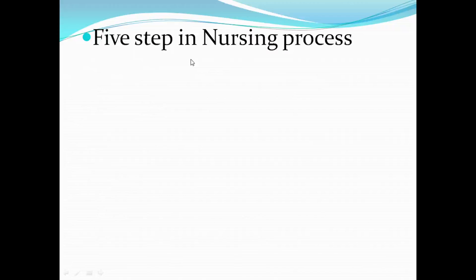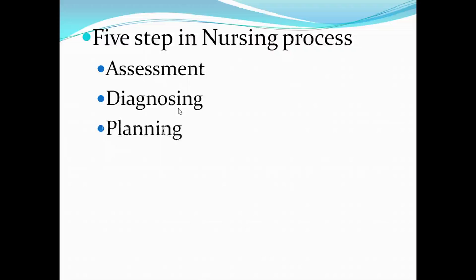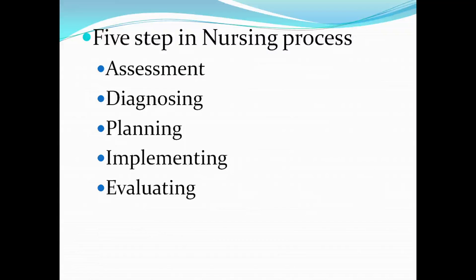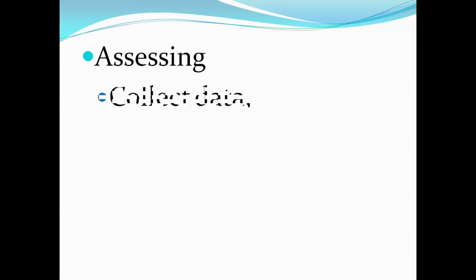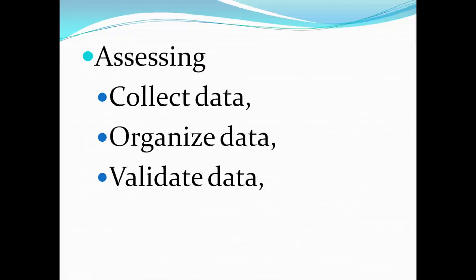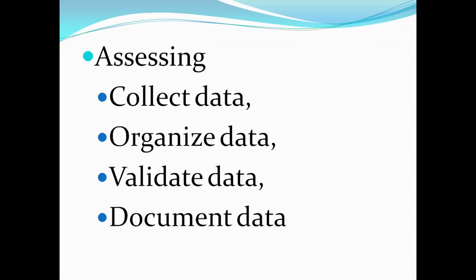These are the six characteristics of nursing process. Now we can see the steps in nursing process: assessment, diagnosing, planning, implementing and evaluating — these are the five steps of nursing process. First, assessing includes collecting the data, organizing the data, validating the data and documenting the data. These are the four sub-steps included in assessing.